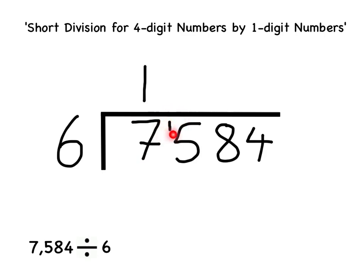This remainder of 1 now turns the 5 into a 15. So the next division is how many 6's are there in 15. I know that there are two 6's in 12, which is close to 15. However, it will give me a remainder of 3.